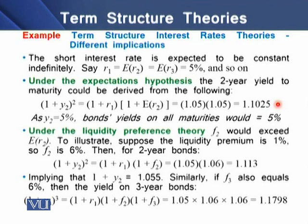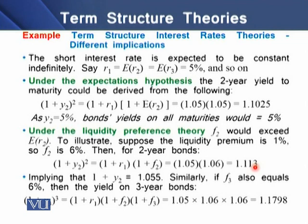So the bond yield on all maturities would also be equal to 5%. Now under the liquidity preference theory, y2 would exceed ER2, meaning there would be a liquidity premium. Assuming the liquidity premium is 1%, f2 = 5% + 1% = 6%. The 2-year bond value is then determined using (1 + r1) × (1 + f2) = 1.05 × 1.06 = 1.113, so (1 + y2) = 1.055, giving y2 ≈ 5.5%.